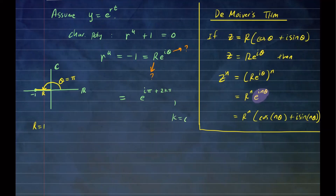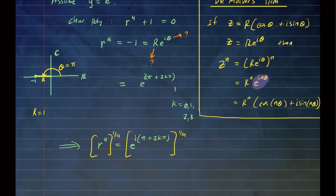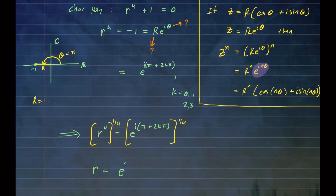k runs from 0, 1, 2, up to 3 — always less than 4 — giving us all four roots. So r to the fourth equals e to the i(π + 2kπ). Since we want to solve for r, we take the fourth root on both sides. This gives r equal to e to the i times (π/4 + 2kπ/4), which simplifies to e to the i(π/4 + kπ/2), where k runs 0, 1, 2, 3. That's how we get all the roots for r.